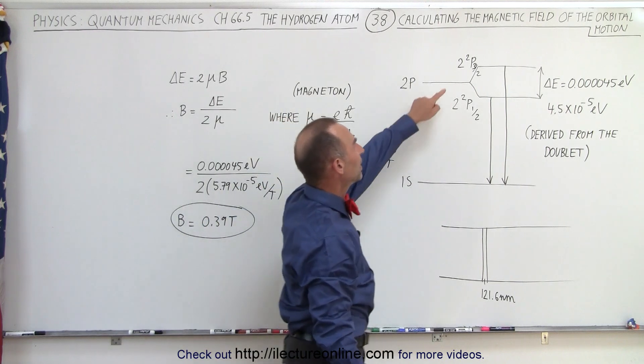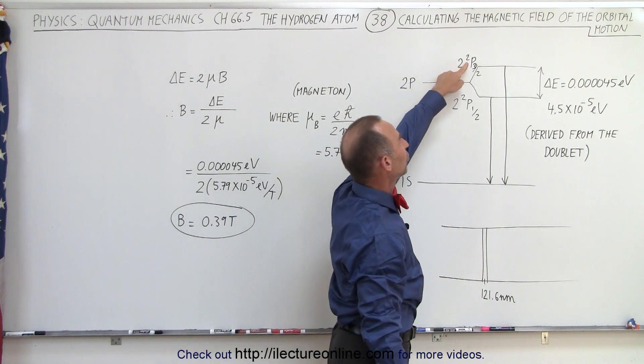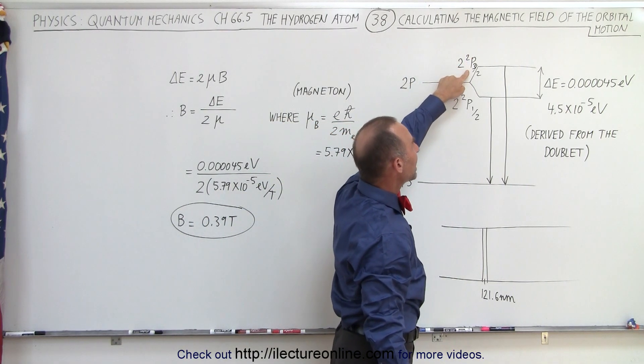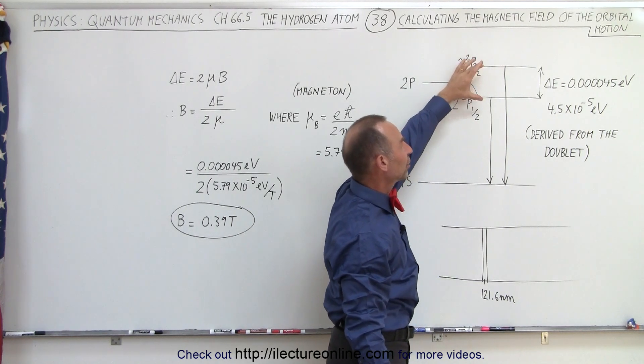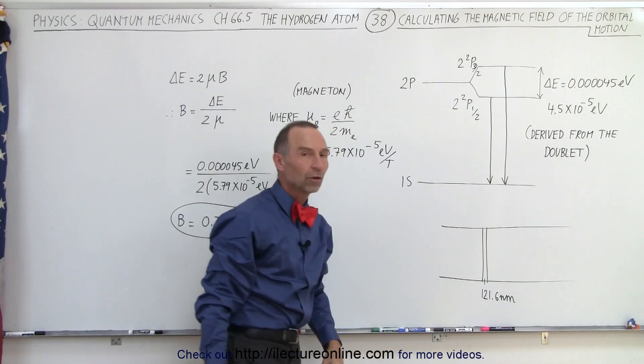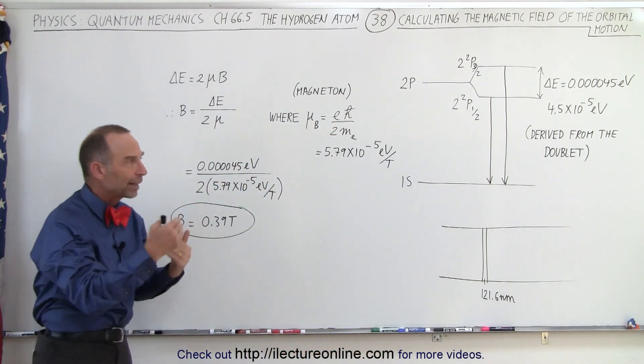As a matter of fact this would be the second energy level. This is called the doublet p three halves and the doublet p one half to differentiate the two energy levels in the p orbital caused by this interaction.